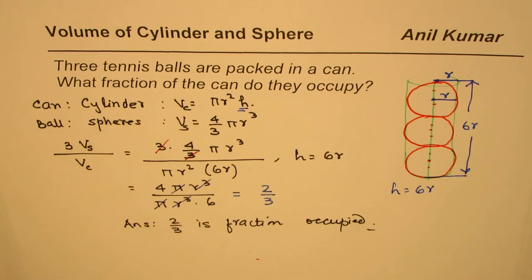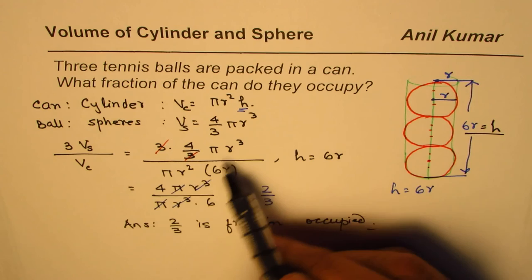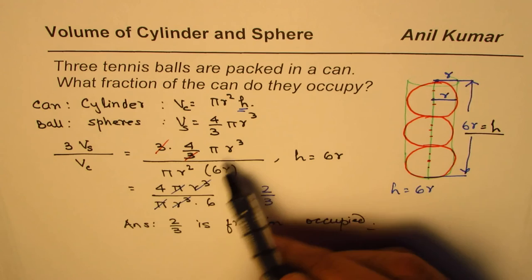And second step is write height in terms of radius. Then you are working with one variable and it becomes easier to simplify. That's the kind of trick. I'm Anil Kumar, you can share and subscribe to my videos. Thank you and all the best.